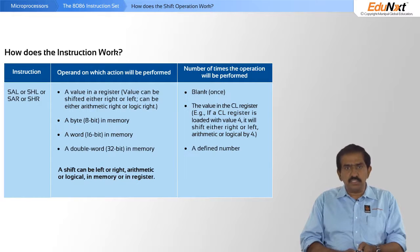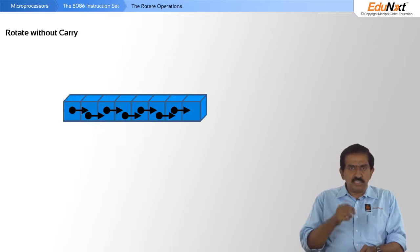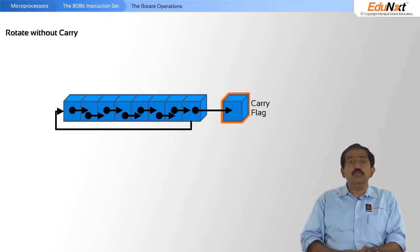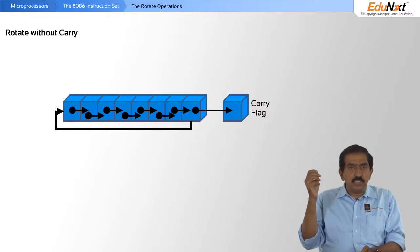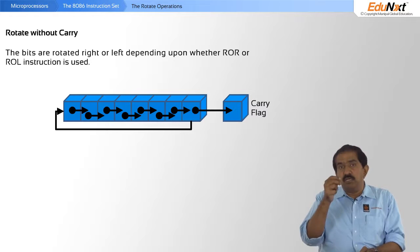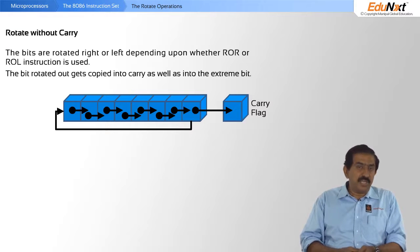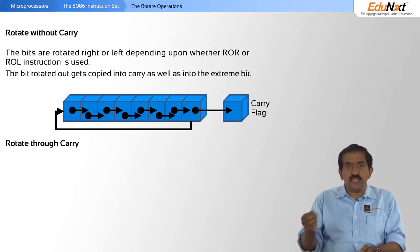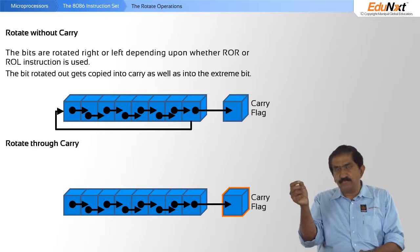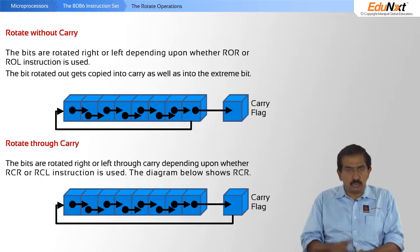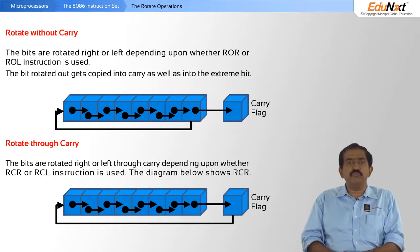Let us now move to another fairly complex instruction — the rotate instruction. In rotate without carry, bit 7 gets rotated back into bit 0 and is also copied into the carry flag. This lets you inspect bit 7 without losing its value. In rotate through carry, bit 7 goes to the carry flag and whatever was previously in the carry flag comes back into bit 0. The difference between these two modes is clear from the diagram.